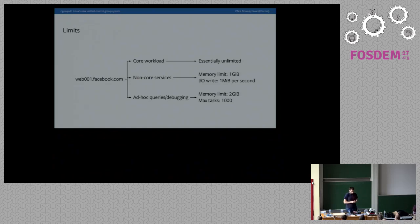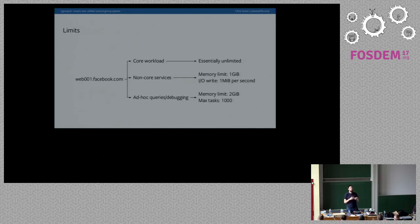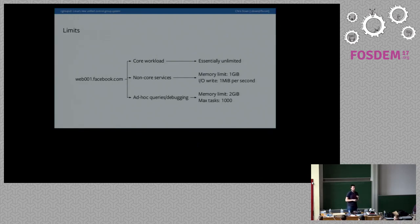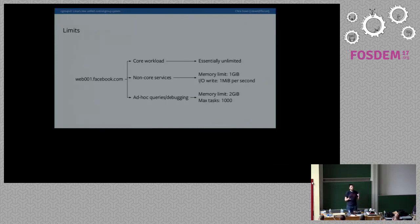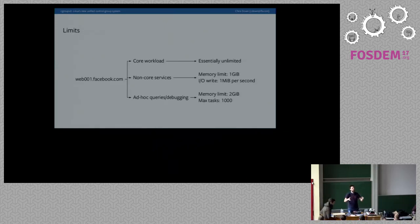If you've had any interaction with cgroups, you've almost certainly been interacting with version 1. Version 2 has been in development for about five years and only just got stable in the Linux kernel. Even on recent kernels, version 1 is typically what's mounted by default, because the changes are backwards incompatible. The fact that we typically boot with our init system only mounting the version 1 hierarchy is a testament to why I'm doing this talk — this is a sell to container experts about why you should give a care about cgroupv2.